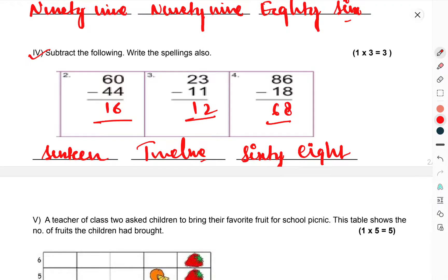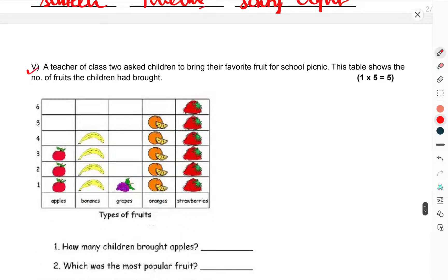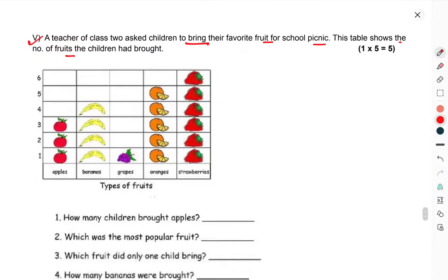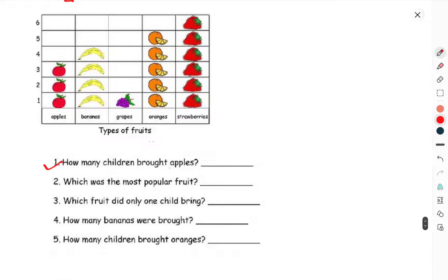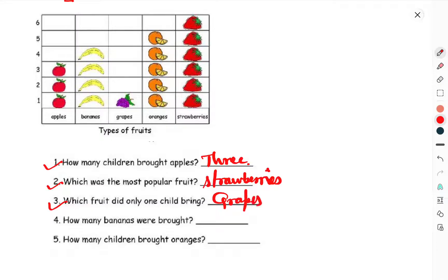You have to subtract and write the spellings as well. Now we come to question number 5. A teacher of class 2 asked students to bring their favourite fruit for a school picnic. This table shows the number of fruits the children had brought. How many children brought apples? 3 children brought apples. Which was the most popular fruit? Strawberries. Which fruit did only one child bring? Grapes. How many bananas were brought? 4 bananas.